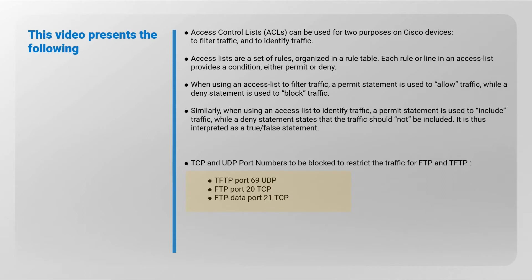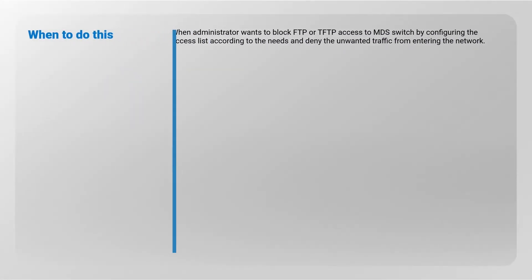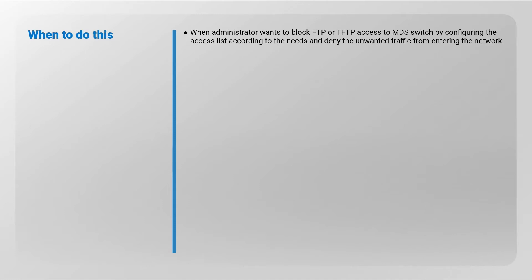Below are the TCP and UDP port numbers to be blocked to restrict the traffic for FTP and TFTP. This should be done when an administrator wants to block FTP or TFTP access to an MDS switch by configuring the access list and denying the unwanted traffic from entering the network.